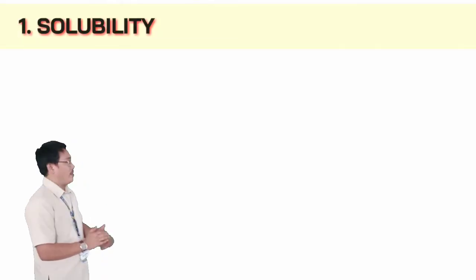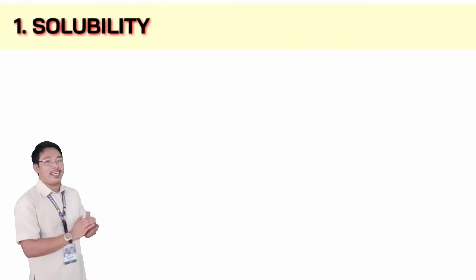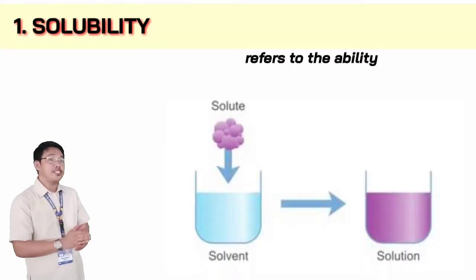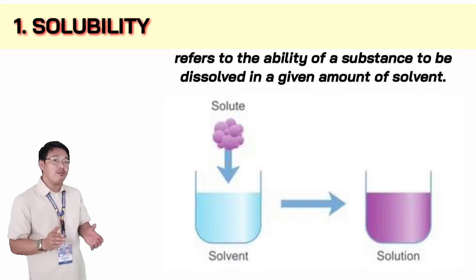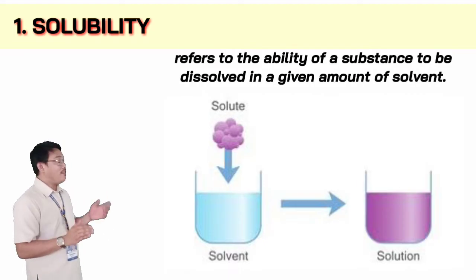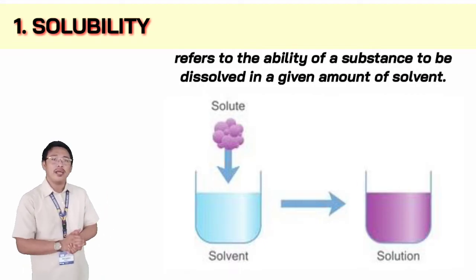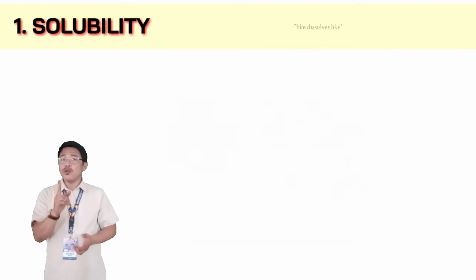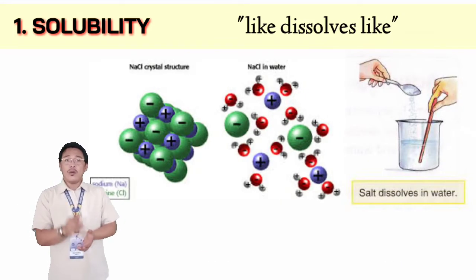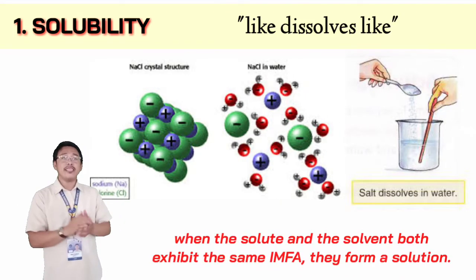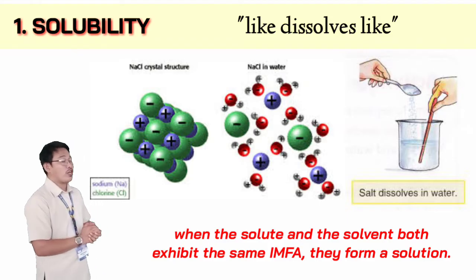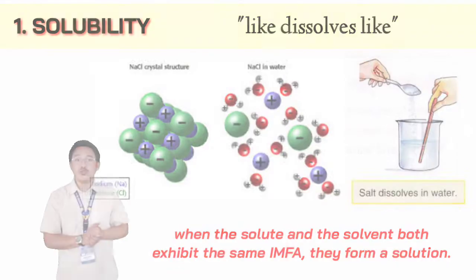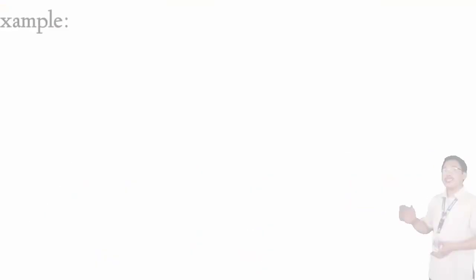Let's start with number one: solubility. Solubility refers to the ability of a substance to be dissolved in a given amount of solvent. Recall the rule: like dissolves like. When the solute and the solvent both exhibit the same intermolecular forces of attraction, they form a solution.